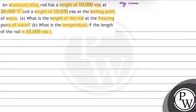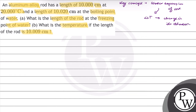For this question, the key concept is linear expansion of a rod. Jab kisi body ke liye change in temperature hota hai, it causes a change in its dimension. There are 3 types of expansions: Linear, Areal, and Volume. In this case, we have linear expansion. In linear expansion, alpha, that is the coefficient of thermal expansion, is equal to change in length upon initial length into change in temperature.